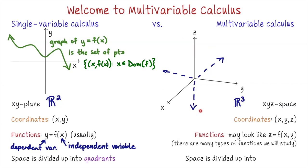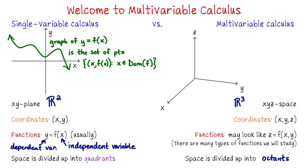If you imagine all of the different zones — where, say, two variables are positive and one is negative — you'll have four zones on top for positive values of z and four zones on the bottom for negative values of z. Since we have eight regions we can divide the space into, we say that R3 divides up into eight octants, instead of quadrants like in R2. I think of multivariable calculus as a very visual subject, so we're going to draw a lot of pictures this semester, knowing that sometimes we're drawing three-dimensional pictures on a two-dimensional surface — so we'll just do the best we can.